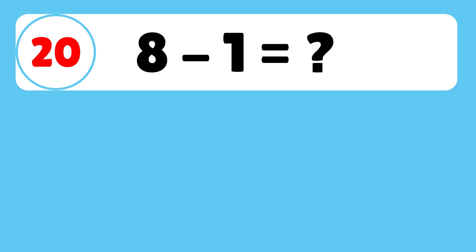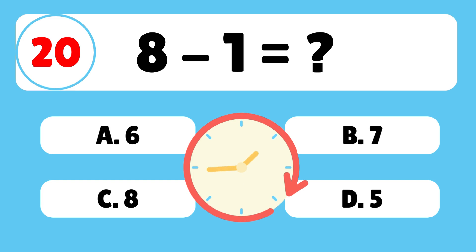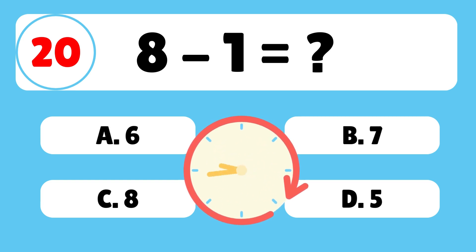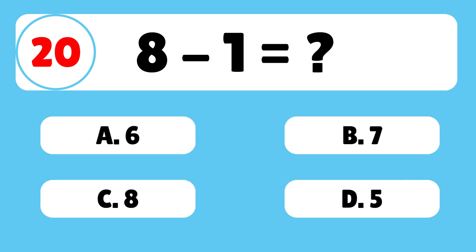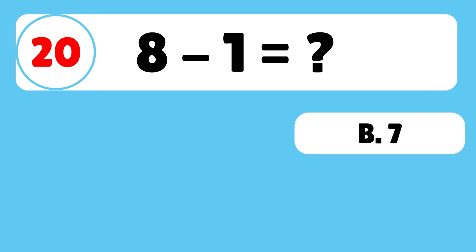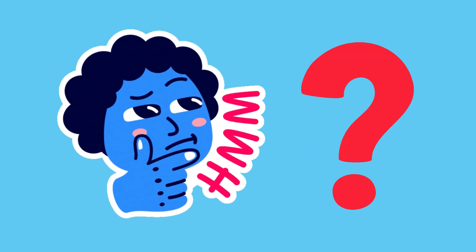Question 20: What is 8 minus 1? The answer is B. 8 minus 1 is equal to 7.